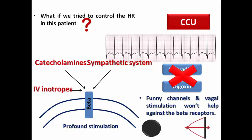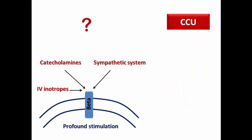We can conclude that funny channel blockade and vagal stimulation will not help against the profound stimulation of beta receptors, so these are useless medications in this case. The compensatory tachycardia is an important mechanism trying to preserve the cardiac output until you correct the cause of the shock. This is our rule regarding rate control.